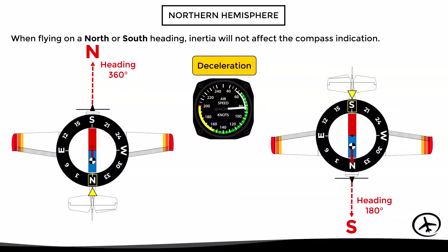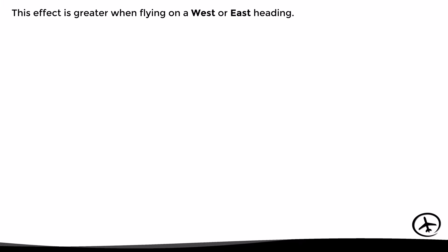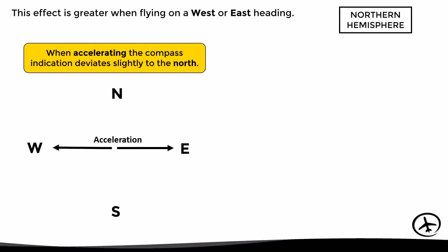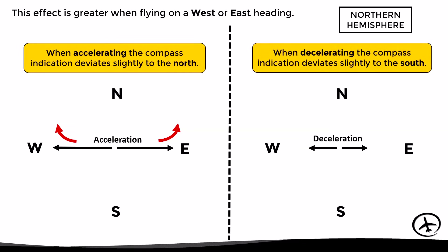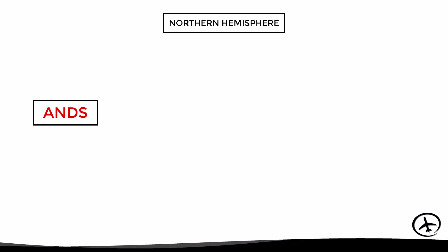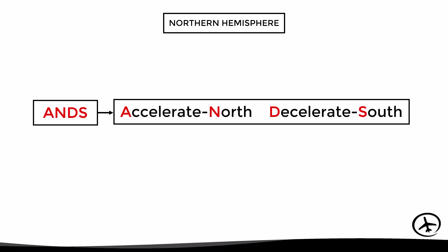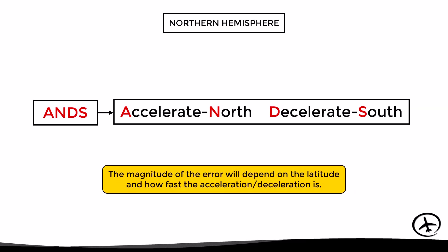In summary, this effect is greatest when flying on a west or east heading. In the northern hemisphere, when the aircraft accelerates the compass indication deviates slightly to the north, while when the aircraft decelerates the compass indication deviates slightly to the south. We can easily remember this with the acronym ANDS, which stands for Accelerate North, Decelerate South. The magnitude of this acceleration error will depend on the latitude and how fast the acceleration or deceleration is.